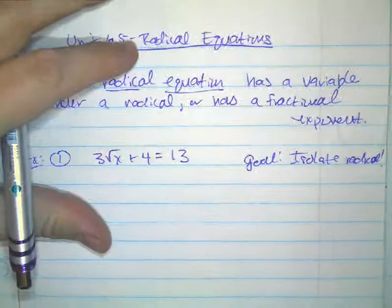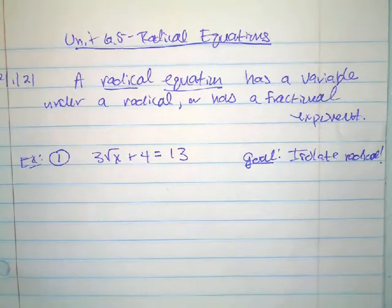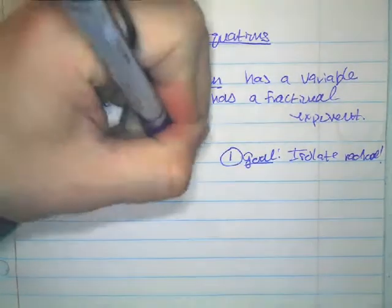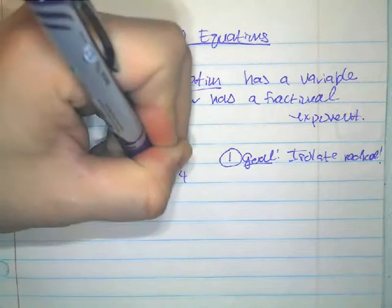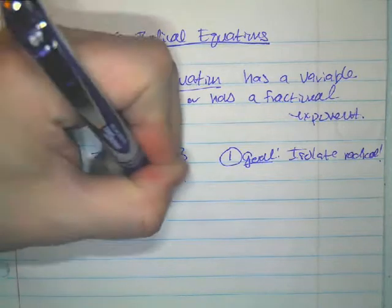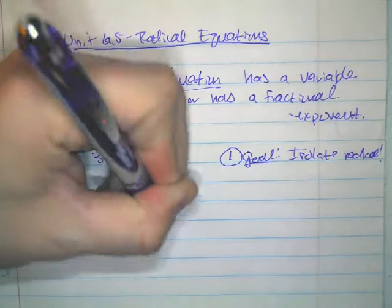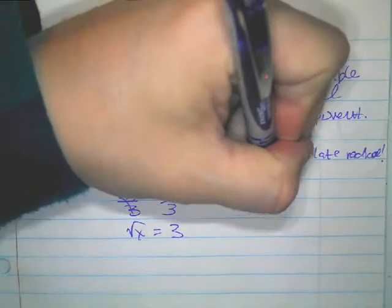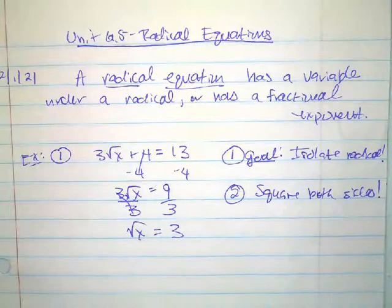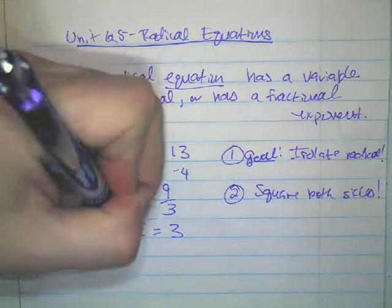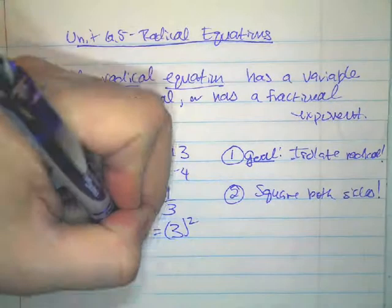Usually the goal is to isolate x, but in this case I want to isolate the term that has the radical. So as my first step, I'll subtract 4 from both sides to get 3 times the square root of x equals 9. Then I divide both sides by 3 to get the square root of x equals 3. Once the radical is isolated, you want to square both sides. Taking the square root and squaring both sides are inverse operations, so squaring both sides cancels out the square root and we get x equals 9.